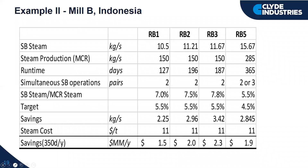Here is another example of a mill overseas with five boilers. Going through the same exercise — between their steam production and their steam for soot blowing, which is 150 and 10 in kilograms per second, at $11 a ton for steam — you can see that these four boilers would range in savings of about $1.5 million to almost $2.5 million. If one were to look at this for the whole mill, it would be a substantial amount of money saved through the year.